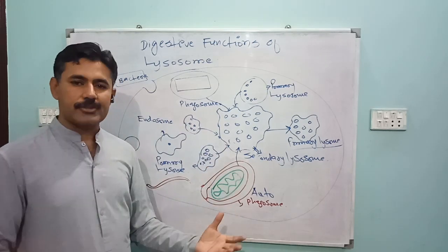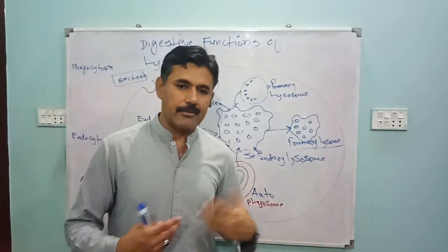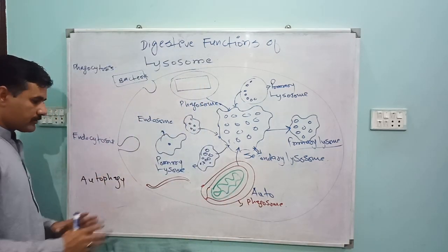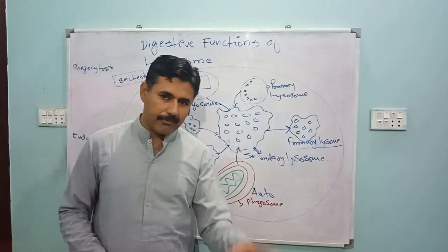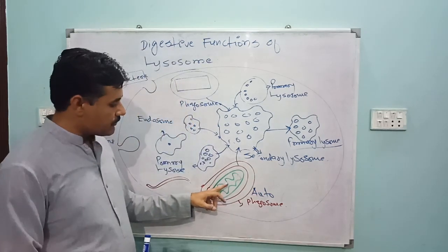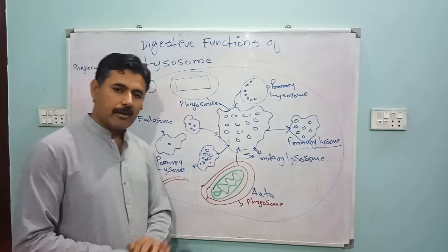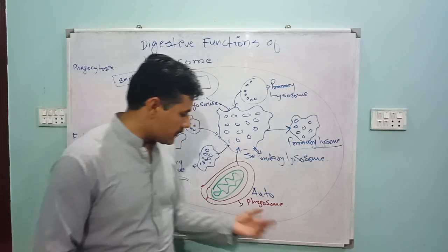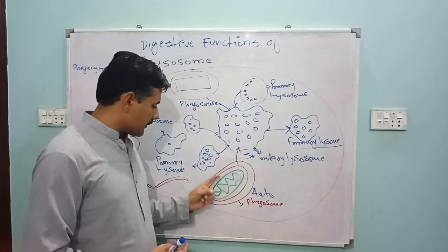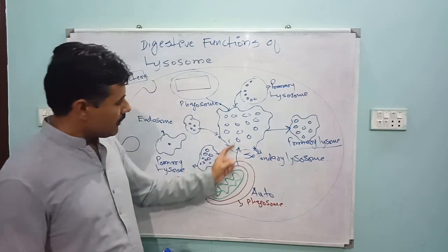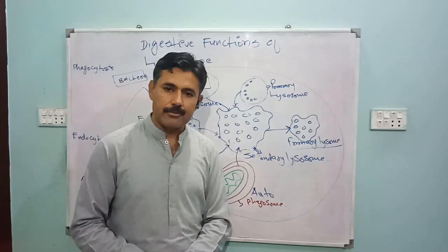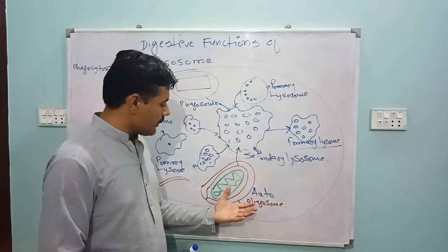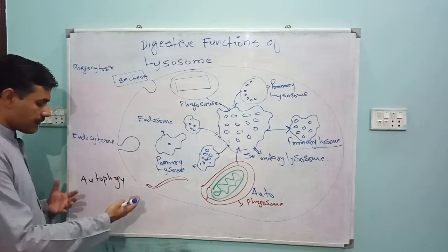Similarly, when cell organelles are non-functional, lysosomes can dispose of them as well. In autophagy, the organelle to be destroyed is surrounded by a membrane provided by the endoplasmic reticulum. This forms a vesicle that fuses with the primary lysosome, again forming a functional secondary lysosome where the organelles are digested.